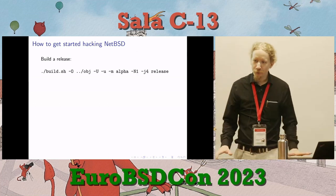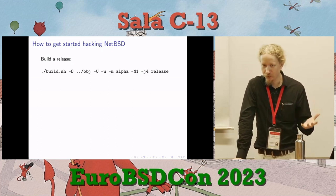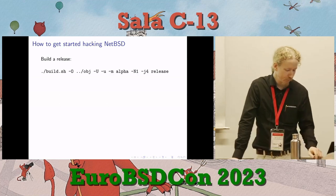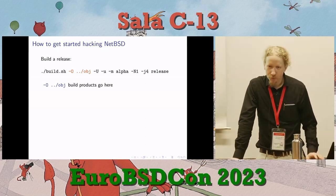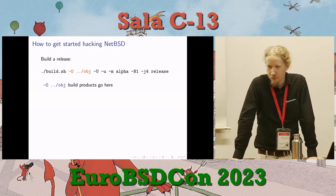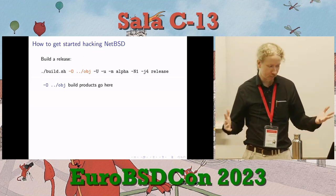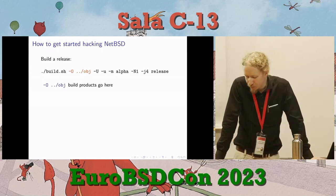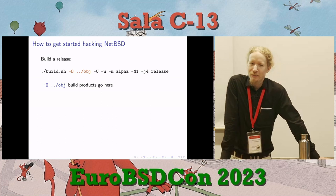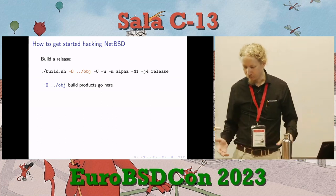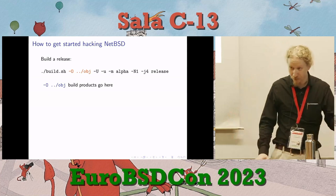Then you run build.sh. This command line is a little bit long — I picked the minimal set of options I use personally because it's convenient for my development. Once you've checked out the source in a directory called 'source' and entered that directory, build.sh -O ../obj says: put all the build products right there. Nothing will be written into your source tree, nothing will be written outside ../obj. If you make a mistake and you're not sure if you can recover, you just delete that directory and start over.